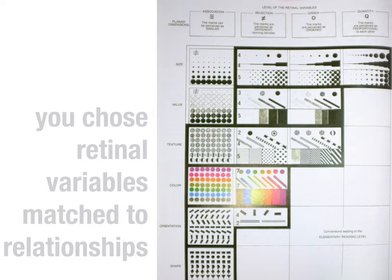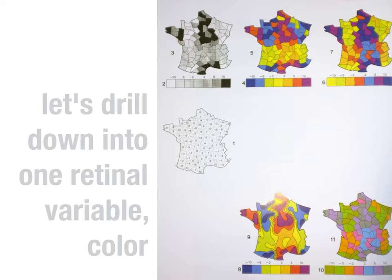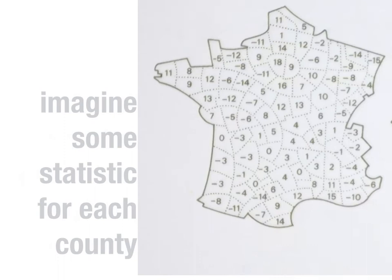He uses a lot of terms a little differently than in common English, and some of this is due to translation. Let's drill down into one retinal variable — color — and Bertin's take on that variable. Instead of Oregon, I'll use France, which Bertin was fond of in his diagrams. Imagine that you have some statistic for each department in France, and you want to represent that statistic by color.